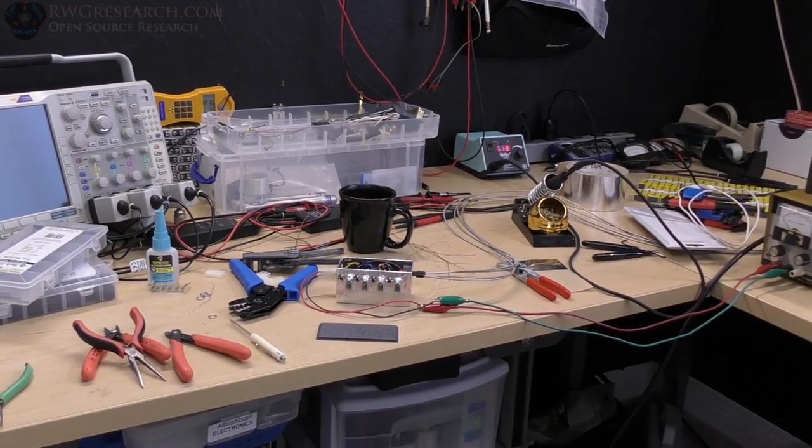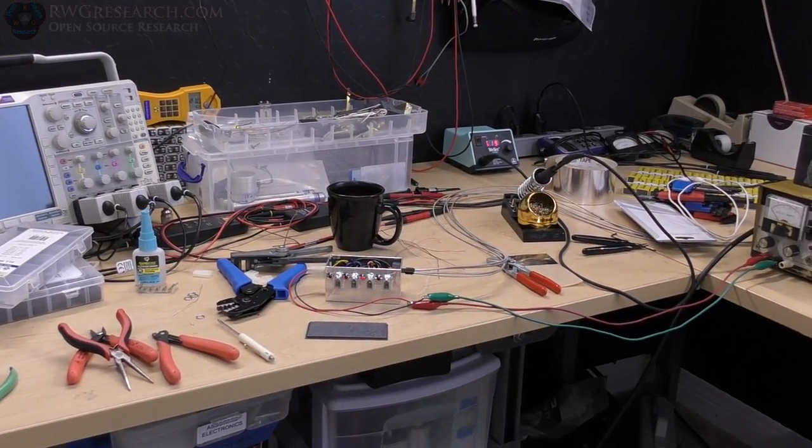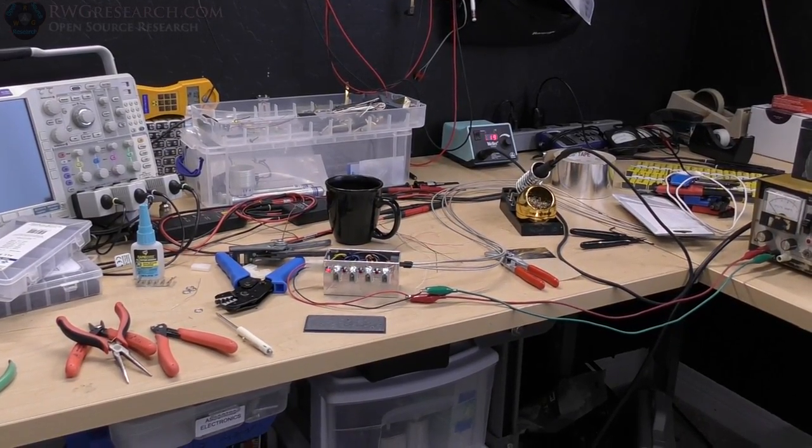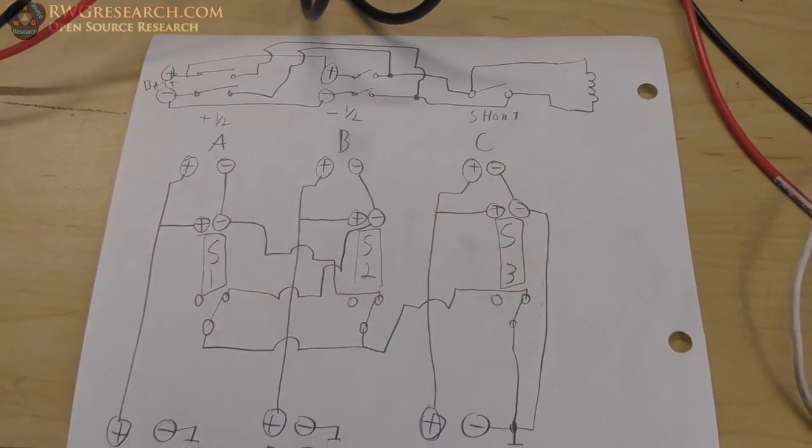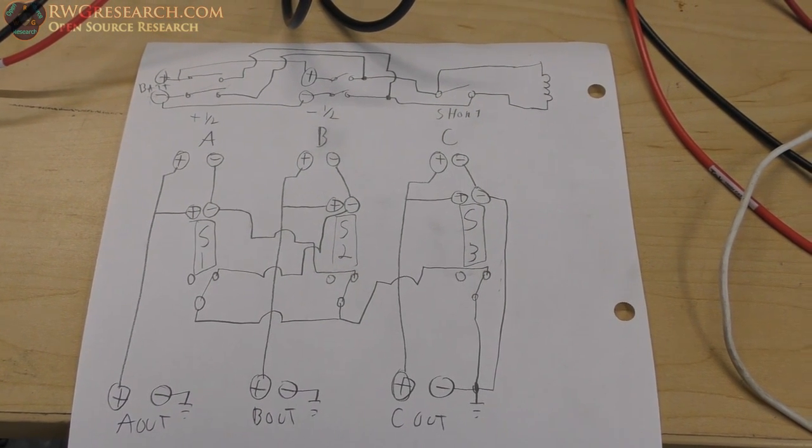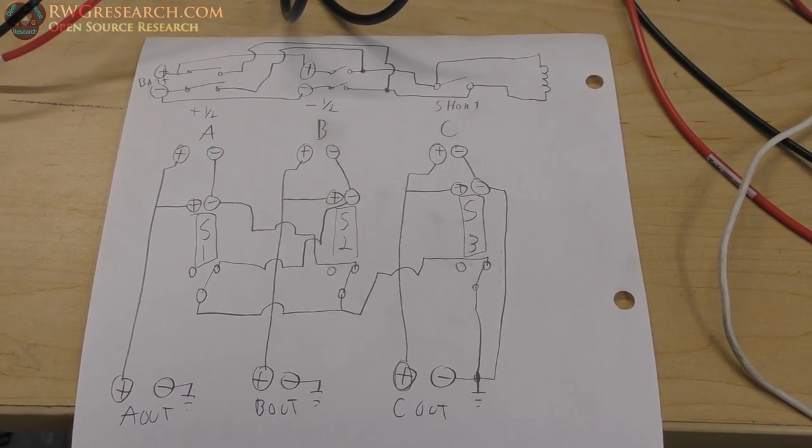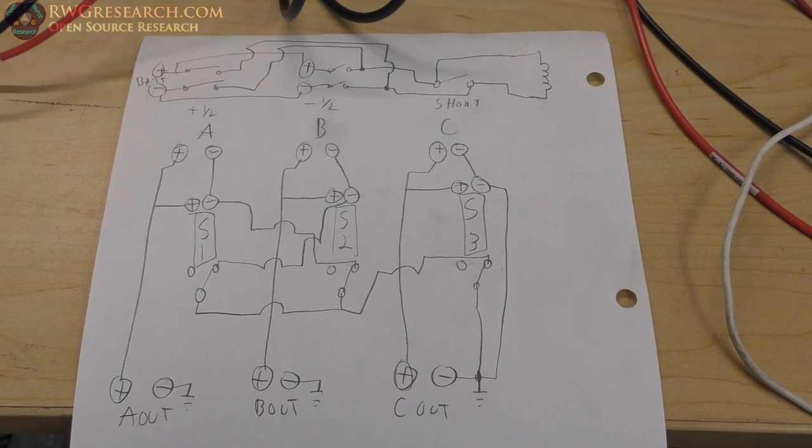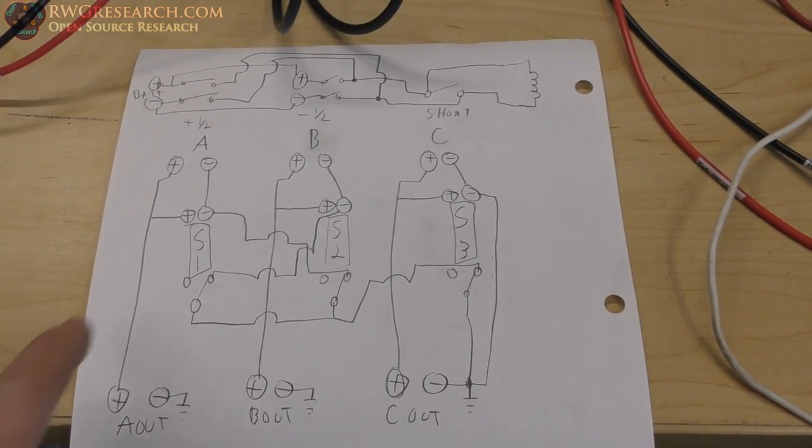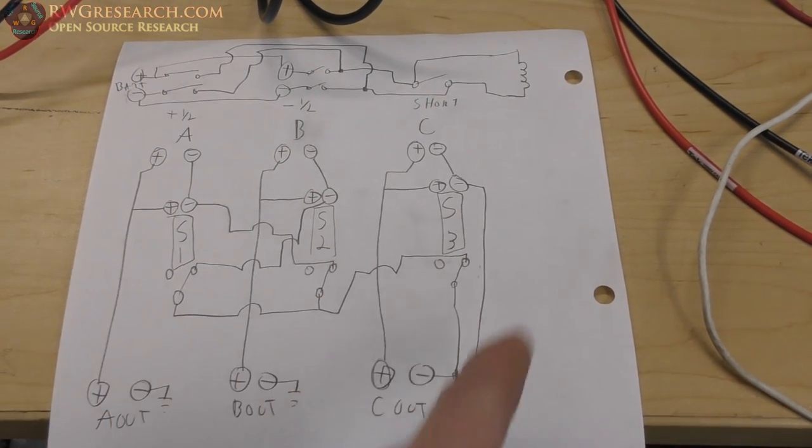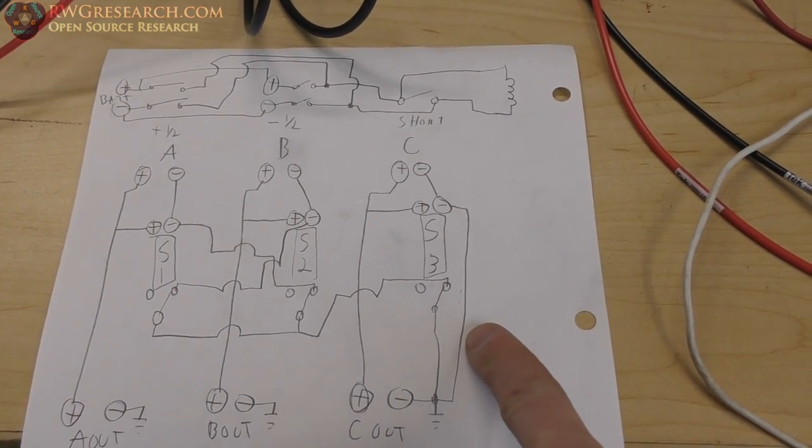Alright, moving on. Here is the relay circuit. Currently I'm only using three outputs of the four. I put an extra in there in case I wanted to use it. I'm sure I will. So right now we basically have interlocks, safety interlocks, so I can always short the coil.